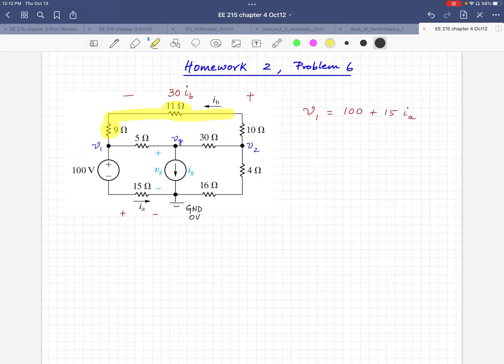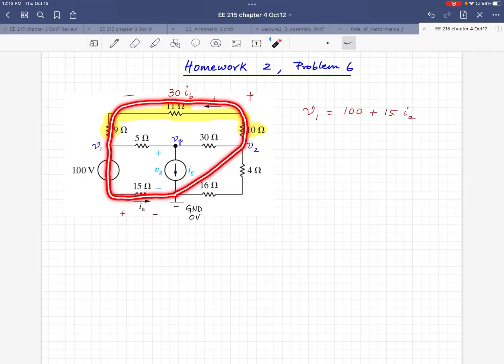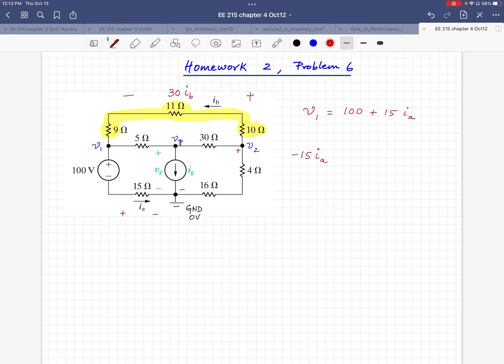I have V2 plus over here and minus over there for V2. So I'm essentially going negative voltage across 15, negative 100, negative 30 times IB, plus V2 equals zero. I'm going to write that KVL equation over here. Starting from ground, ending to ground, going in a clockwise manner. I get negative 15 times Ia, negative 100, negative 30 IB, and I got plus V2 equals zero.